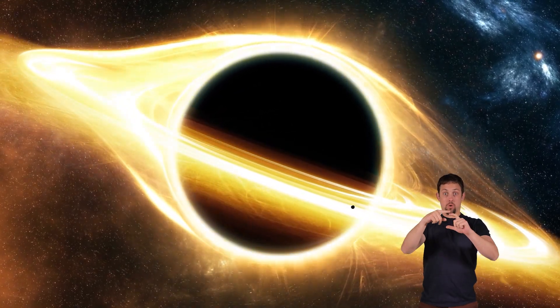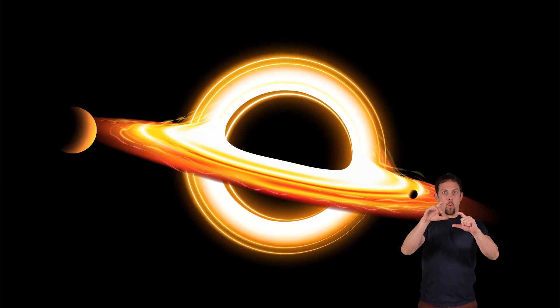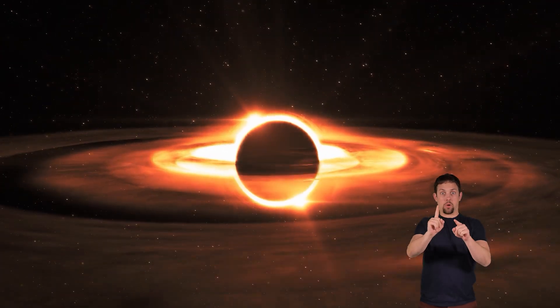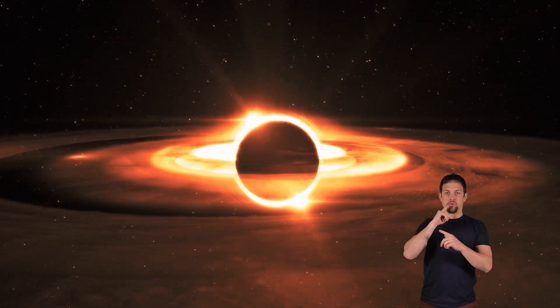The event horizon is a boundary around a black hole. Rather than being a physical surface, it is a point where the escape velocity exceeds the speed of light.